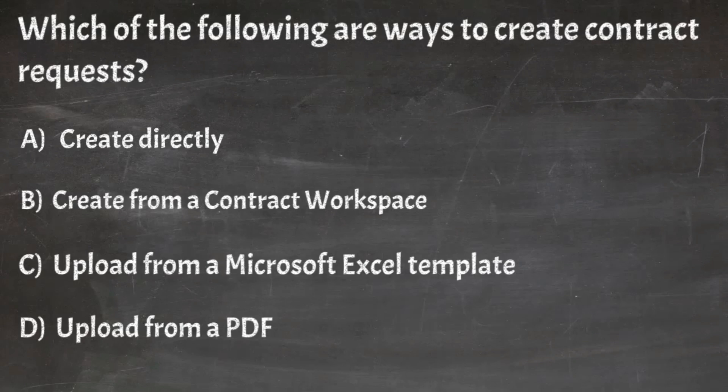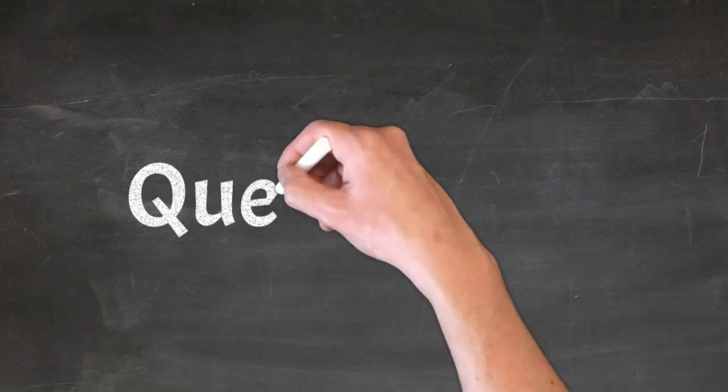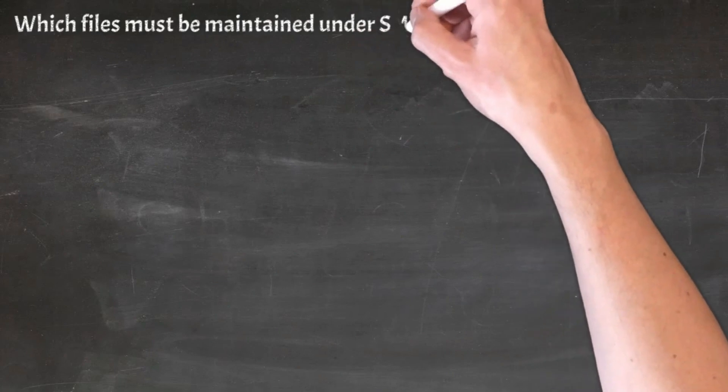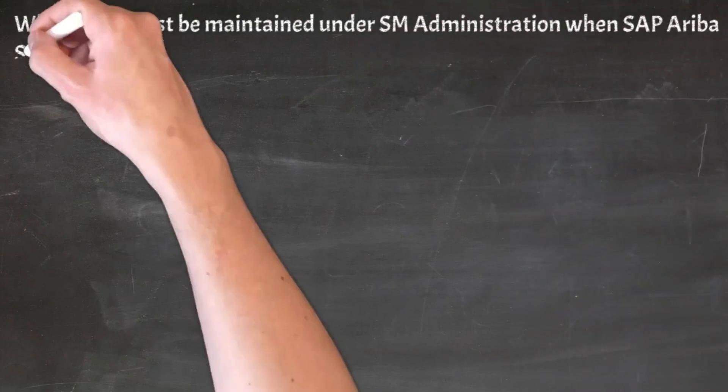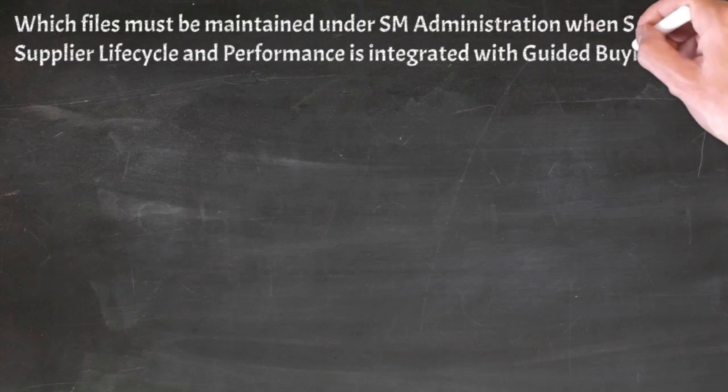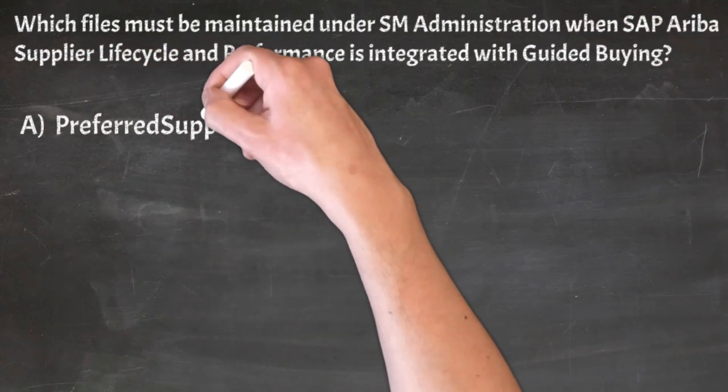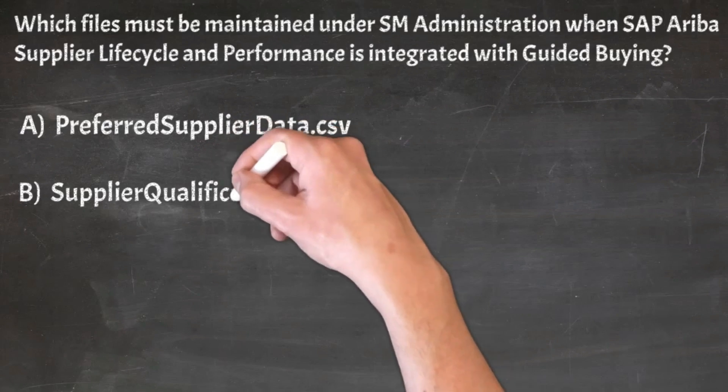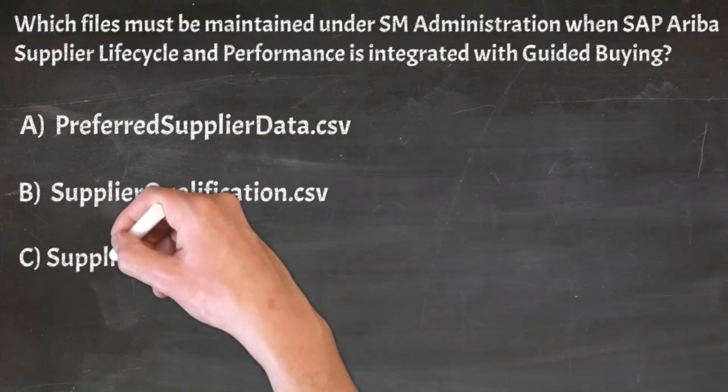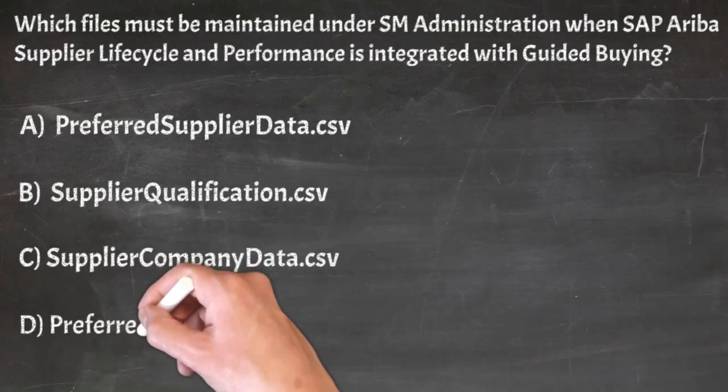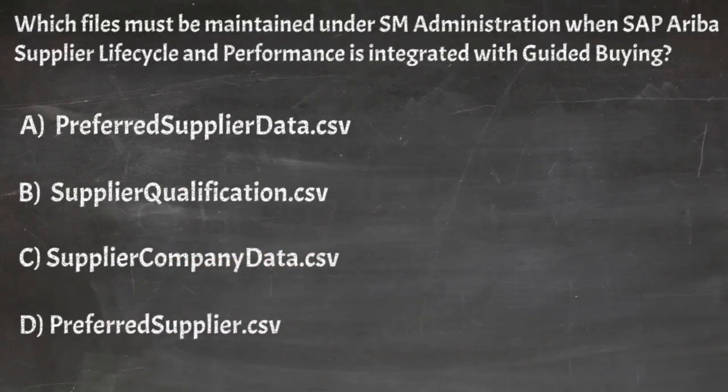Correct answer: A. Create directly. Question 14: Which files must be maintained under SAIM administration when SAP Ariba supplier lifecycle and performance is integrated with guided buying? A. PreferredSupplierData.CSV, B. SupplierQualification.CSV, C. SupplierCompanyData.CSV, D. PreferredSupplier.CSV.